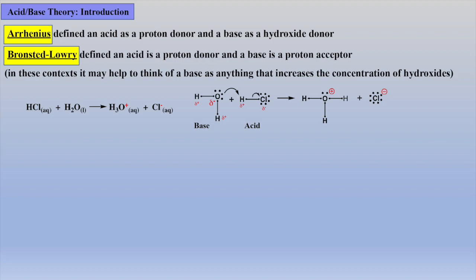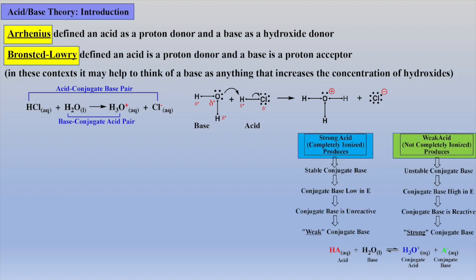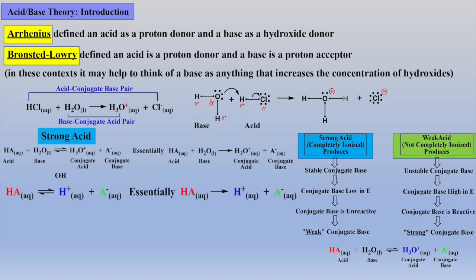In the next example, HCl is the acid, the proton donor, and water is the base, the proton acceptor. They form an acid conjugate base pair and a base conjugate acid pair. The extent of ionization is directly proportional to the stability of the conjugate base. Thus for a strong acid, it may help to think of the conjugate base as being stable or low in energy, unreactive, and often referred to as simply a weak conjugate base. The strong acid equilibrium will lie far to the right, approximately 100% dissociated, and the equilibrium is often simply written with just an arrow.